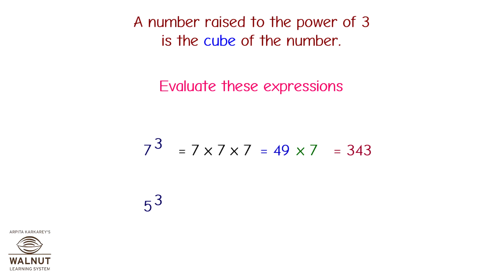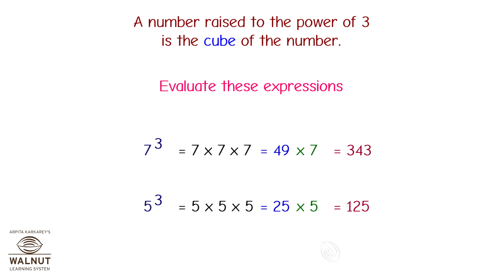5 cube is equal to 5 into 5 into 5. So first, 5 into 5 is equal to 25, and 25 into 5 is equal to 125. Therefore, 5 cube is equal to 125. 4 cube is equal to 4 into 4 into 4. So first, 4 into 4 is equal to 16, and 16 into 4 is equal to 64. Therefore, 4 cube is equal to 64.